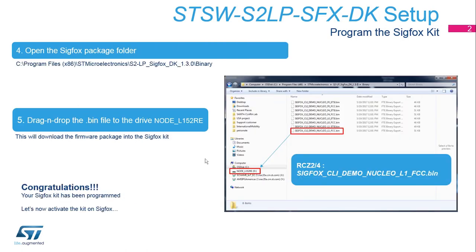Programming the board. Step 4: Open the Sigfox package under C:\Program Files (x86)\STMicroelectronics\S2LP-Sigfox-DK1\Binary folder. Step 5: There are several binary files related to different microcontrollers and radio configuration zones. Choose the appropriate binary file — sigfox-cli-demo-nucleo-l1-fcc.bin for the US. Drag and drop this BIN file to the drive Node L152RE. This will download and flash the firmware into the board. You should be able to see the LED flashing on the board. Congratulations!